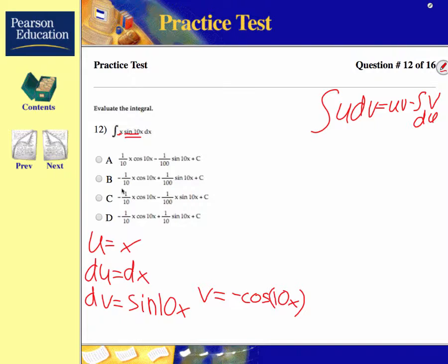So this would actually be negative 10 cosine 10x, but dv is sine 10x. So to get that 10 to cancel out, you have to divide by 10. These are all four points that we need, so we can put them into the equation.